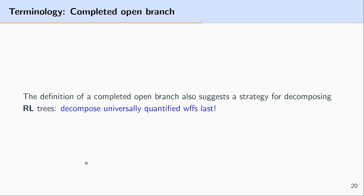The second example not only illustrates the three conditions for a completed open branch, but also suggests an efficient strategy for decomposing truth trees: we should always try to decompose universally quantified well-formed formulas last, leaving those formulas for the end and decomposing all other formulas first.